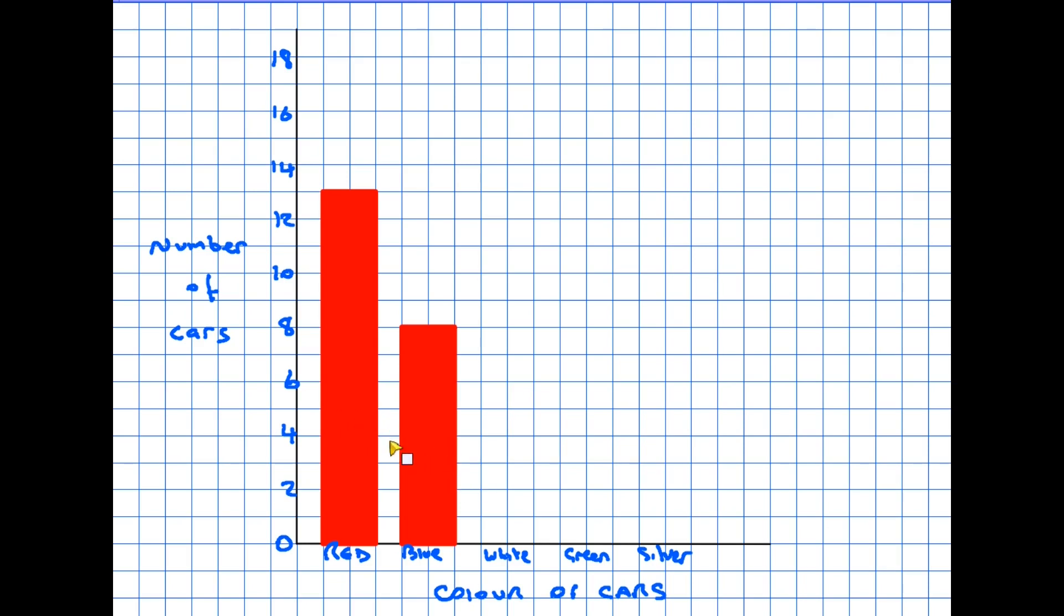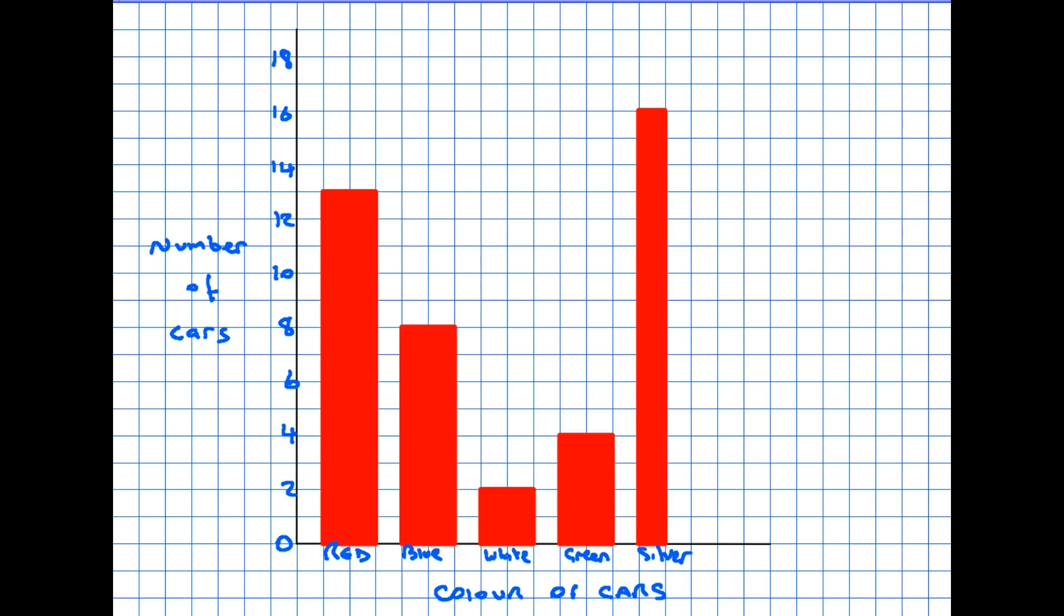You'll also notice all the bars have to be the same width and as I go along you'll see that the spaces are the same width as each other as well. So white cars, there are two of them, one space there and a two square wide bar. Green, there were four of them, puts that there. And silver, which was our most popular color of car, goes all the way up to 17.